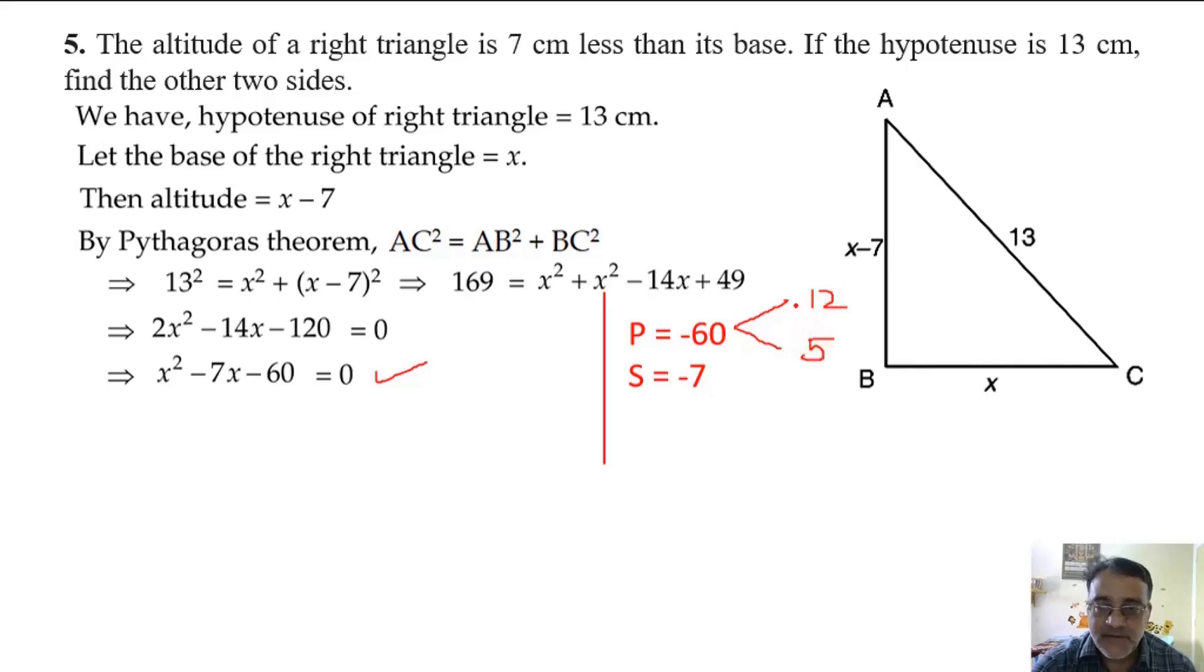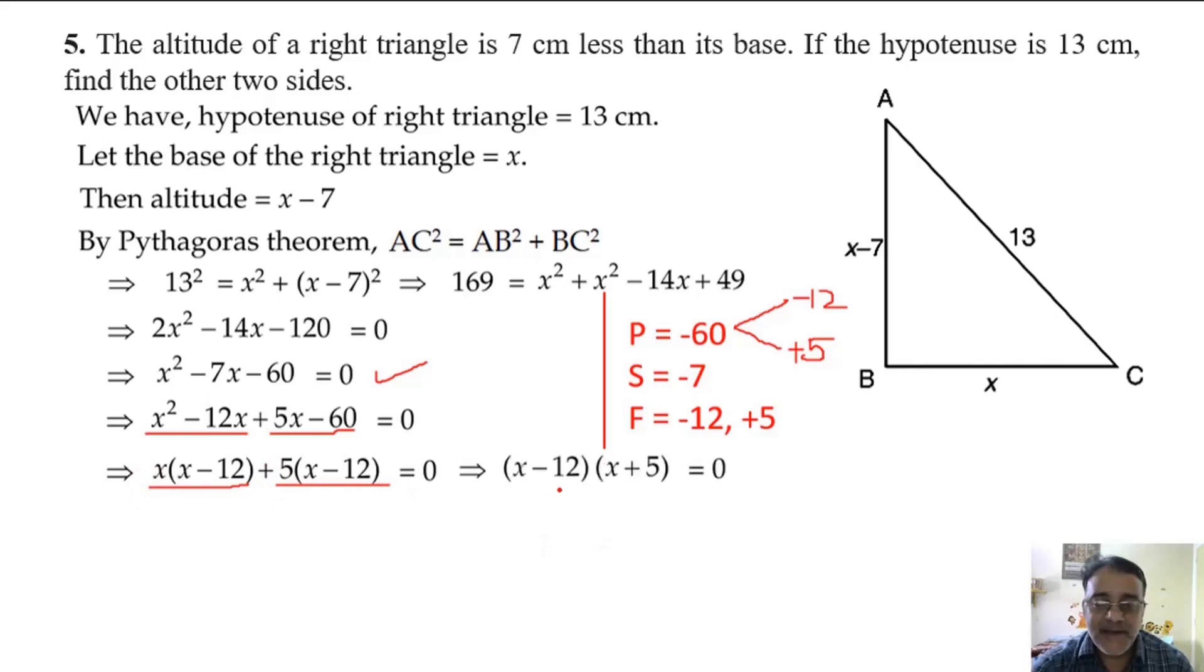The sum sign will be on the bigger number and the other will be opposite sign, so minus 12 plus 5. What is common between these two? X. And what is the common factor between these two? X minus 12. So if you take x minus 12 common, you will get two factors. Then you have to equate with 0 and find the value of x.